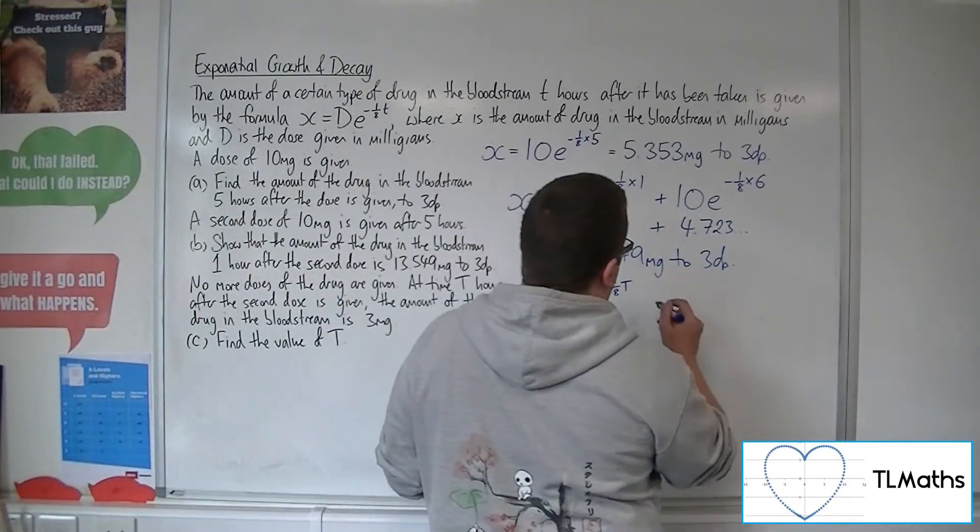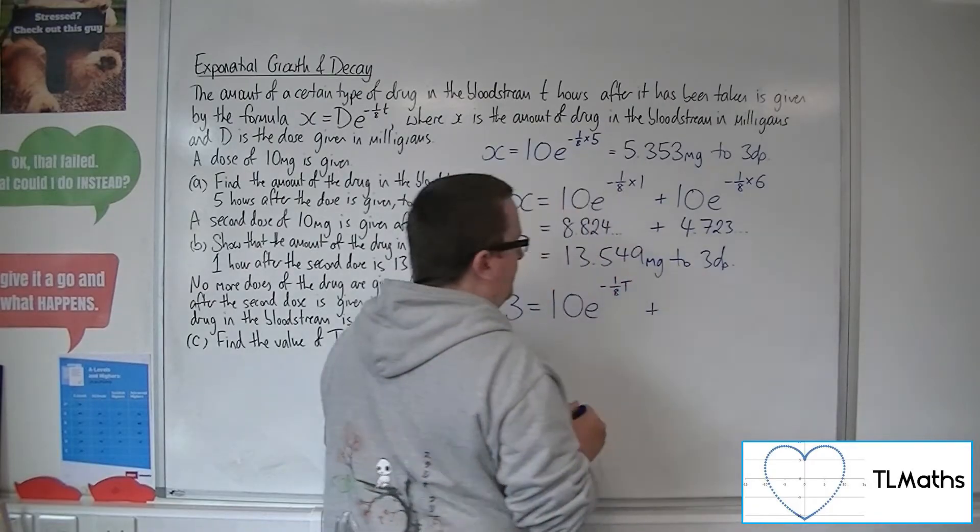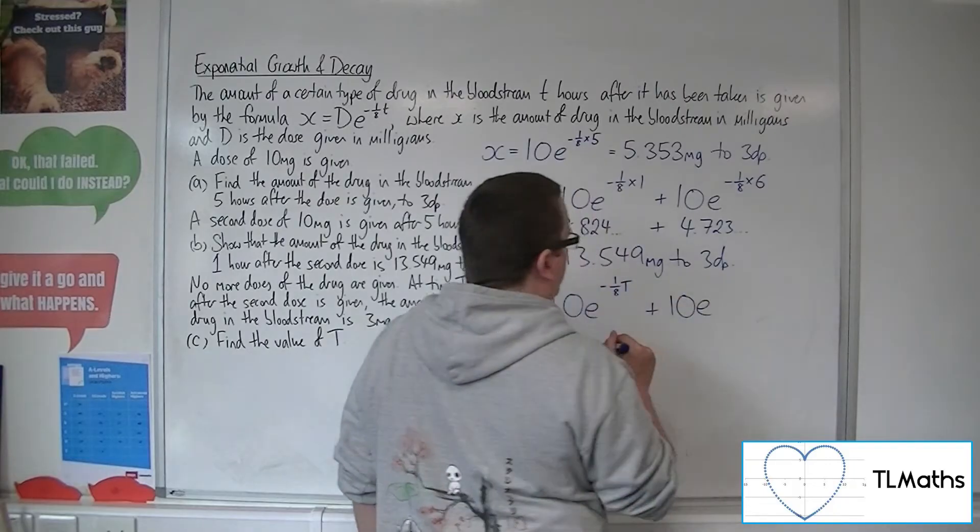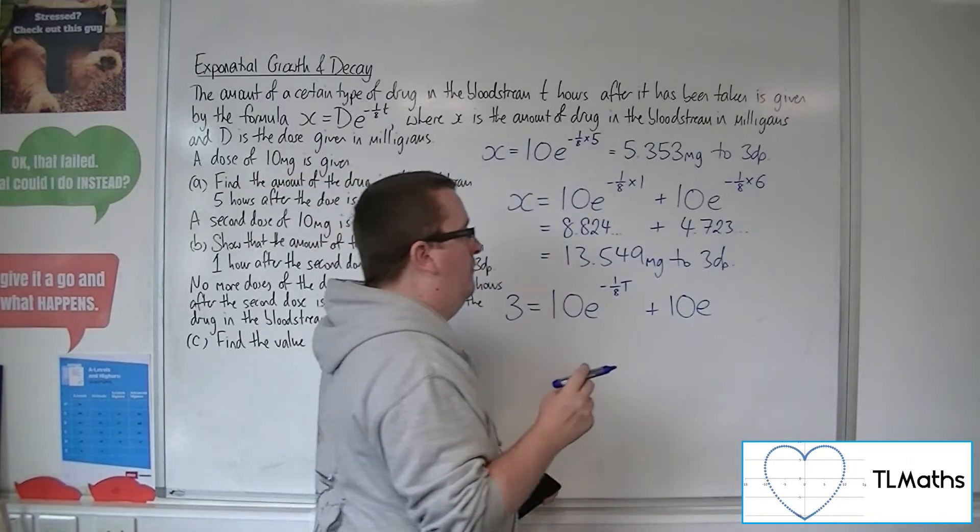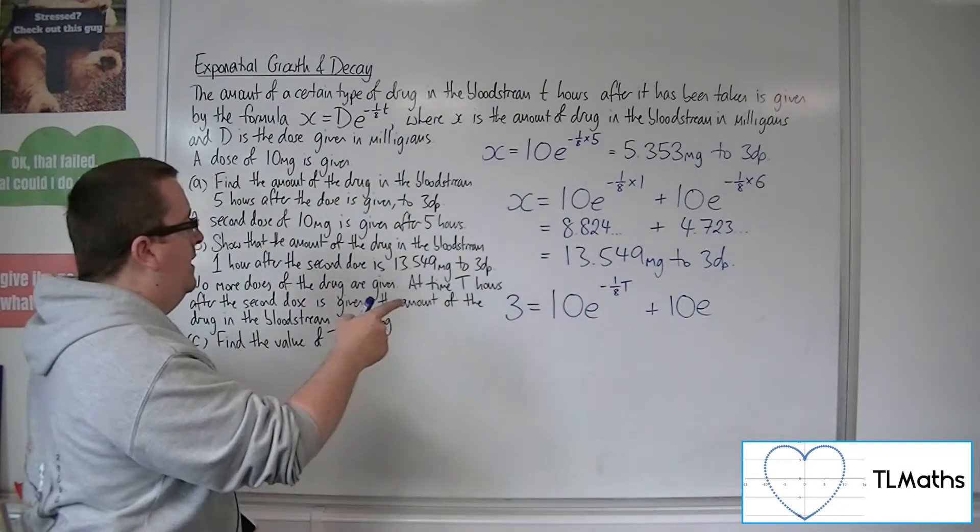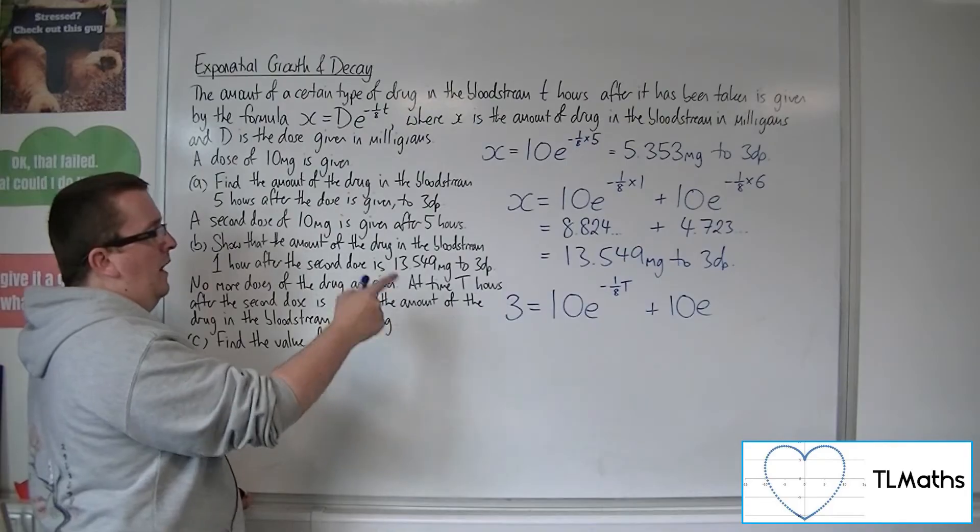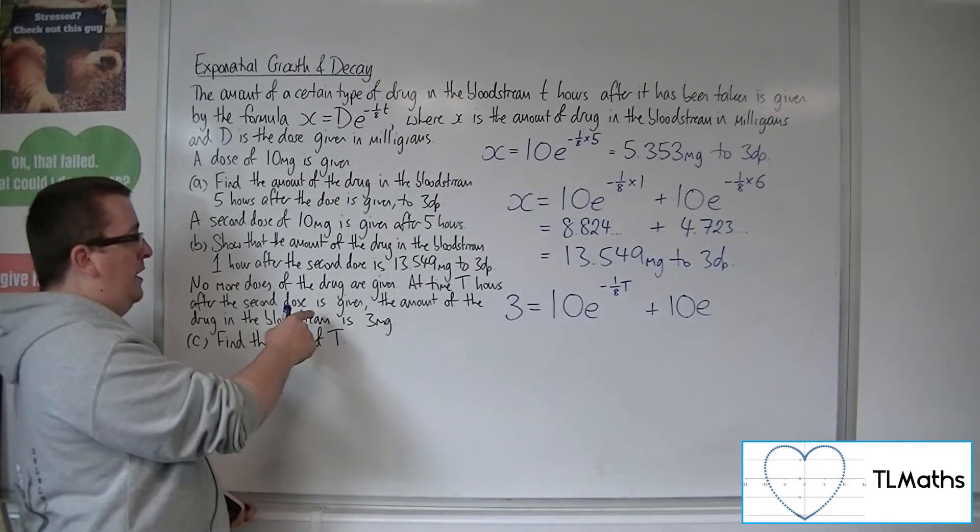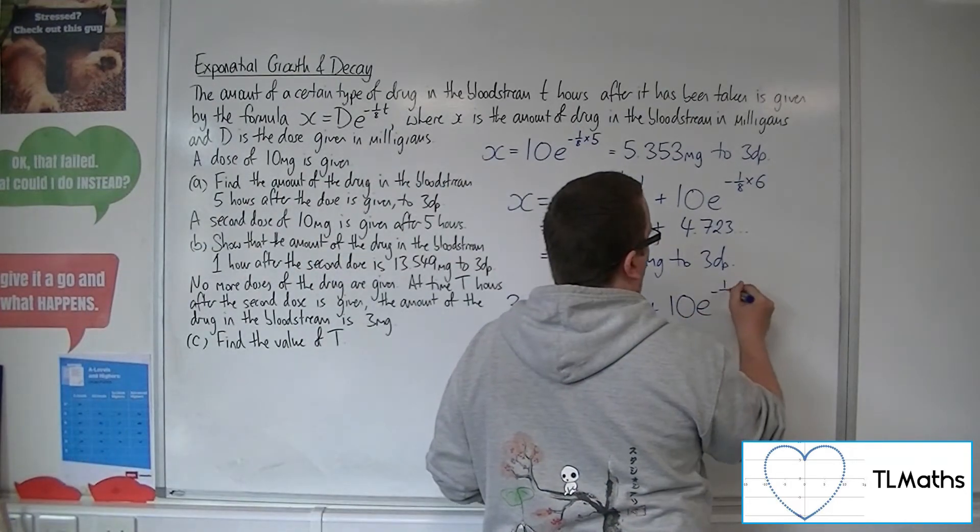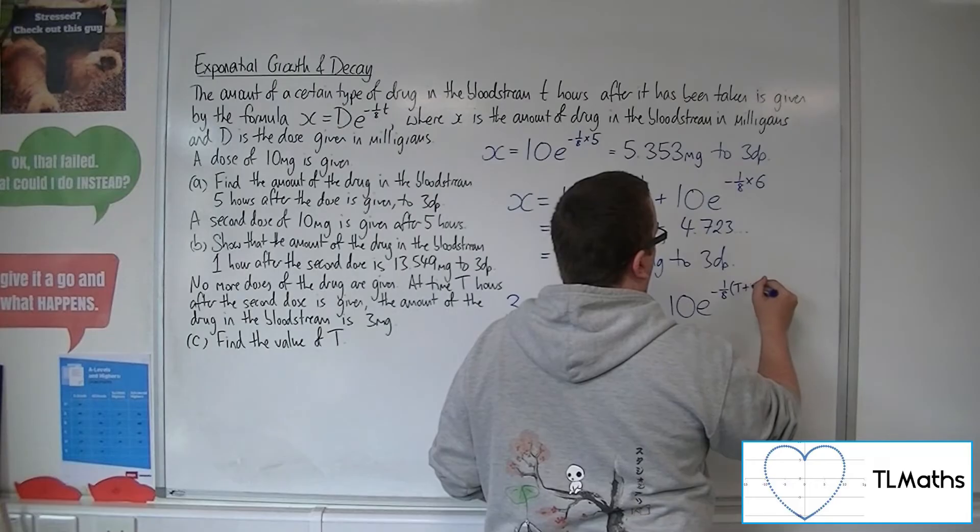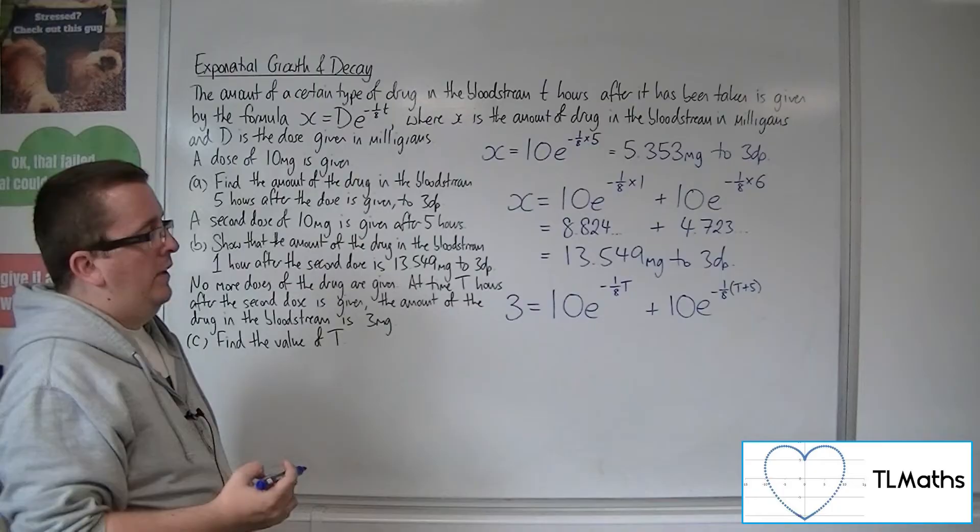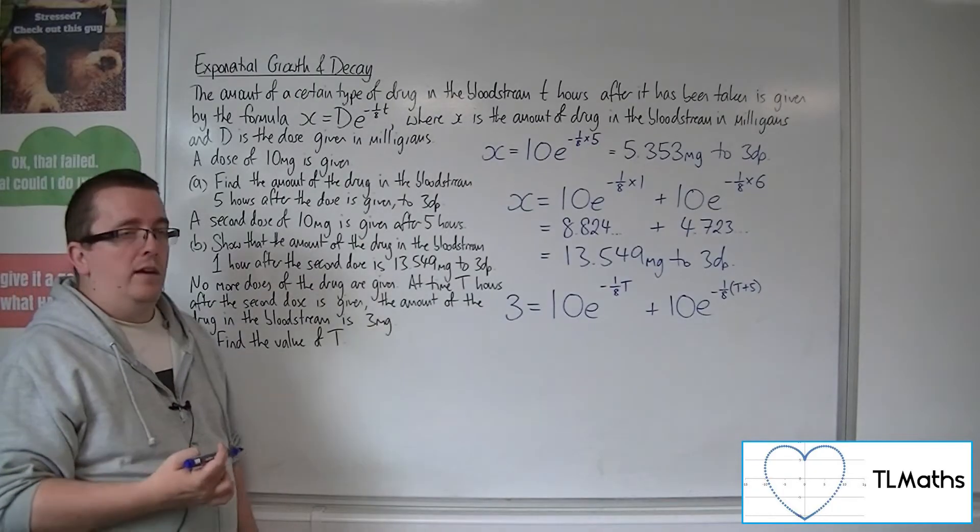Now the first dose that's working behind the scenes will be given by 10e to the power of, now we would have, because T is after the second dose, this will be T plus five. So minus one-eighth of T plus five. Okay, so this is the equation that we're being asked to solve.